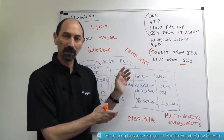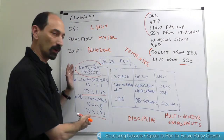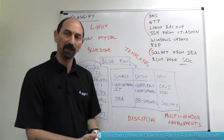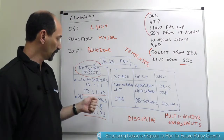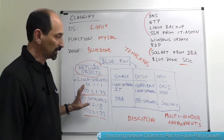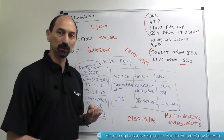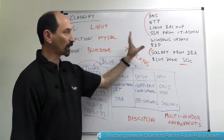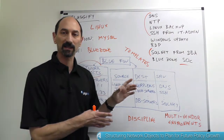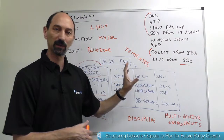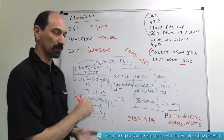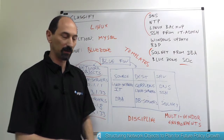The advantage of writing your policy this way — using network objects that come from these categories — is that when you have a new server being added to your data center, what you really need to do is just add the IP address to the appropriate objects. If you've done that correctly, you don't need to touch the policy rules because they're already in place. All the network access required because it's a Linux server or because it's in the blue zone is already baked into the firewall policy rules, which means you have to do less work and your policy is more compact and allows you to grow more quickly.